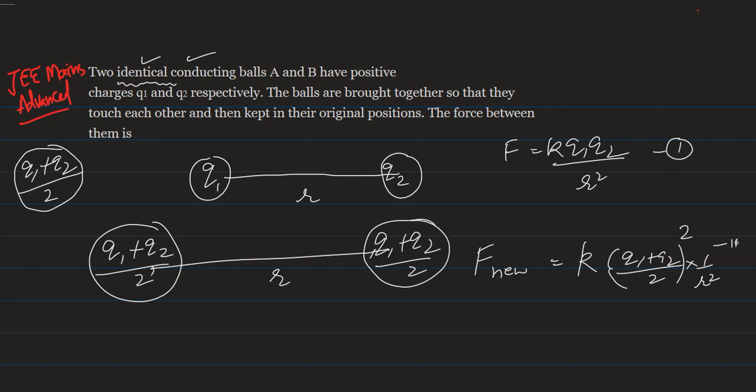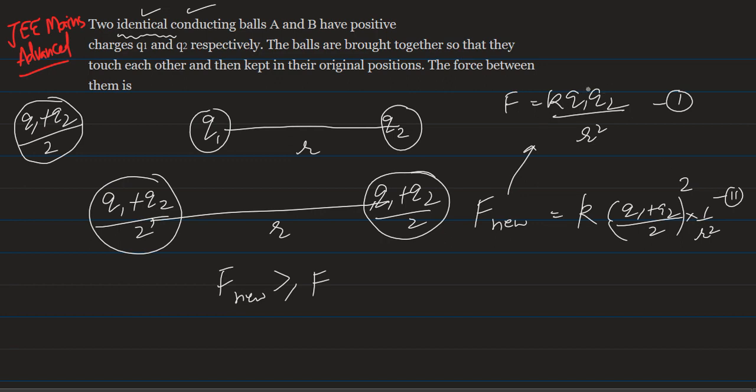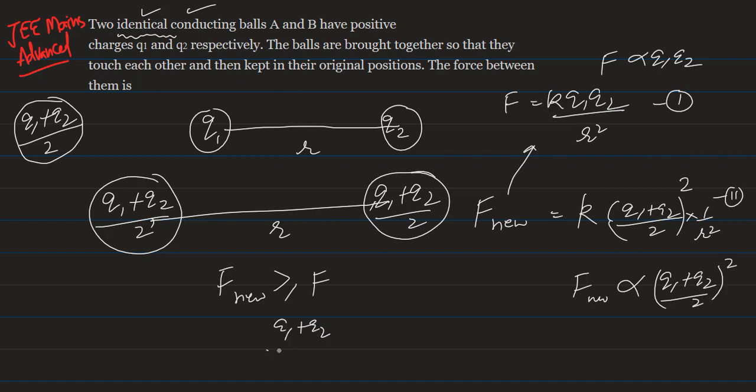Now we need to find what is the new force with respect to the previous one. The new force is greater than or equal to F. This is because in the initial case, force is proportional to Q1 times Q2, and in the new case, the force is proportional to Q1 plus Q2 upon 2 whole square. As Q1 plus Q2 upon 2 is the arithmetic mean and root Q1 Q2 is the geometric mean, and arithmetic mean is always greater than or equal to geometric mean.